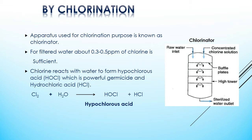Chlorine is the most widely used disinfectant throughout the world. The apparatus used for chlorination is known as a chlorinator, which is a high tower having a number of baffle plates. Water and a proper quantity of concentrated chlorine solution are introduced at its top and get thoroughly mixed during passage through the tower. At the bottom, sterilized water is collected.